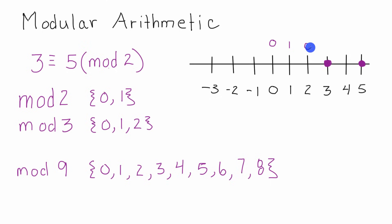So this becomes 0, 1, 0, 1. So 3 has the value 1 in mod 2, and 5 also has the value 1 in mod 2 as well. So therefore, 3 and 5 essentially have the same value when we're dealing with mod 2.